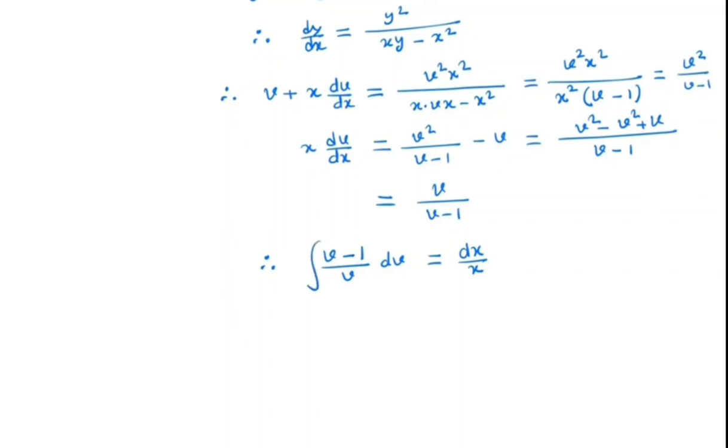So we take integral both sides. So by simplifying we get in the left hand side 1 minus 1 by v dv is equal to integral dx by x. So left hand side integral is equal to v minus ln v is equal to ln x plus c.